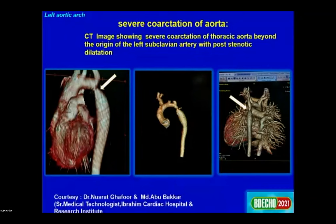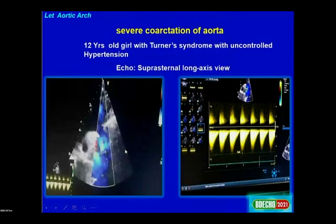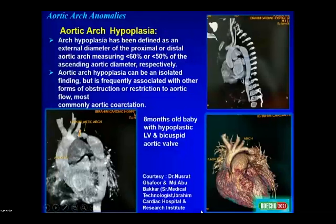Coarctation of the aorta: a 20-year-old girl with Turner syndrome and uncontrolled hypertension. Suprasternal view shows severe coarctation beyond the left subclavian artery on CT image. Arch hypoplasia: an eight-month-old baby with hypoplastic left heart and bicuspid aortic valve has a distal aortic arch measuring less than 50 percent of the ascending aorta.